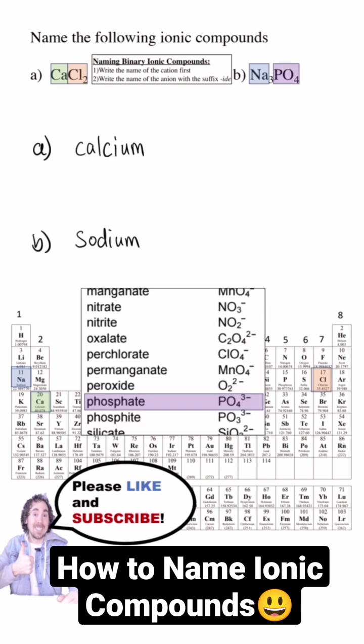Then we name the anion. There are two kinds of anions. Monatomic anions are just non-metals from the periodic table that have gained electrons and have a negative charge. To distinguish them from the uncharged atom, we add the ending "-ide" to their name. So this is calcium chloride.